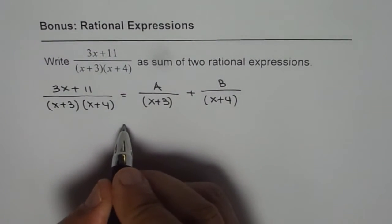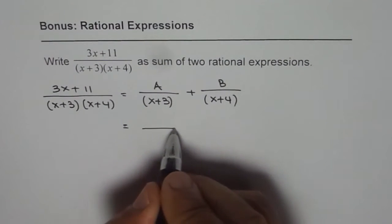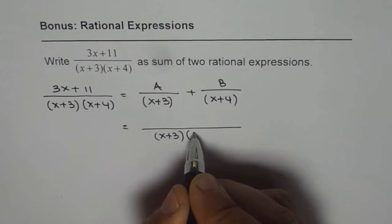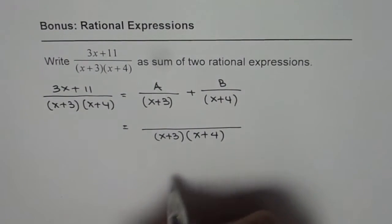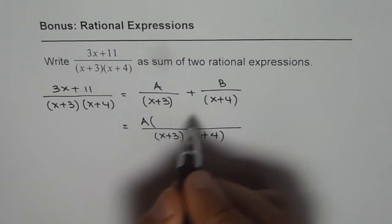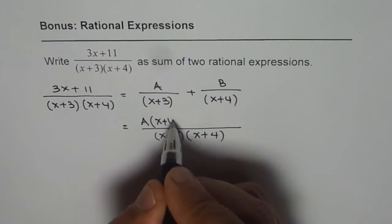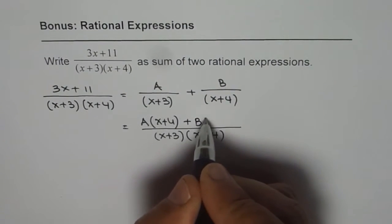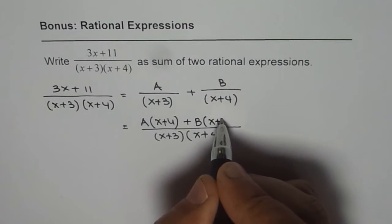So let us try to solve it. If I take common denominator of (x plus 3) times (x plus 4), what do I get? I get A times (x plus 4) plus B times (x plus 3).